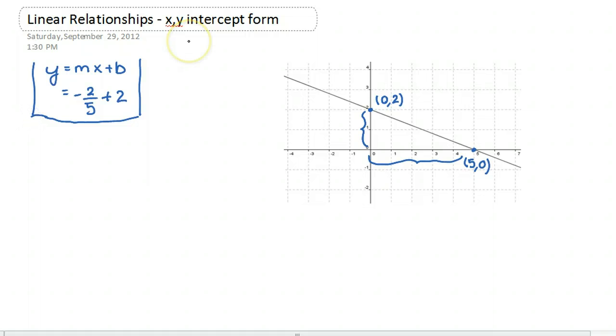The general form for x-y-intercept form is 1 is equal to x over a plus y over b, where a is your x-intercept and b is your y-intercept.